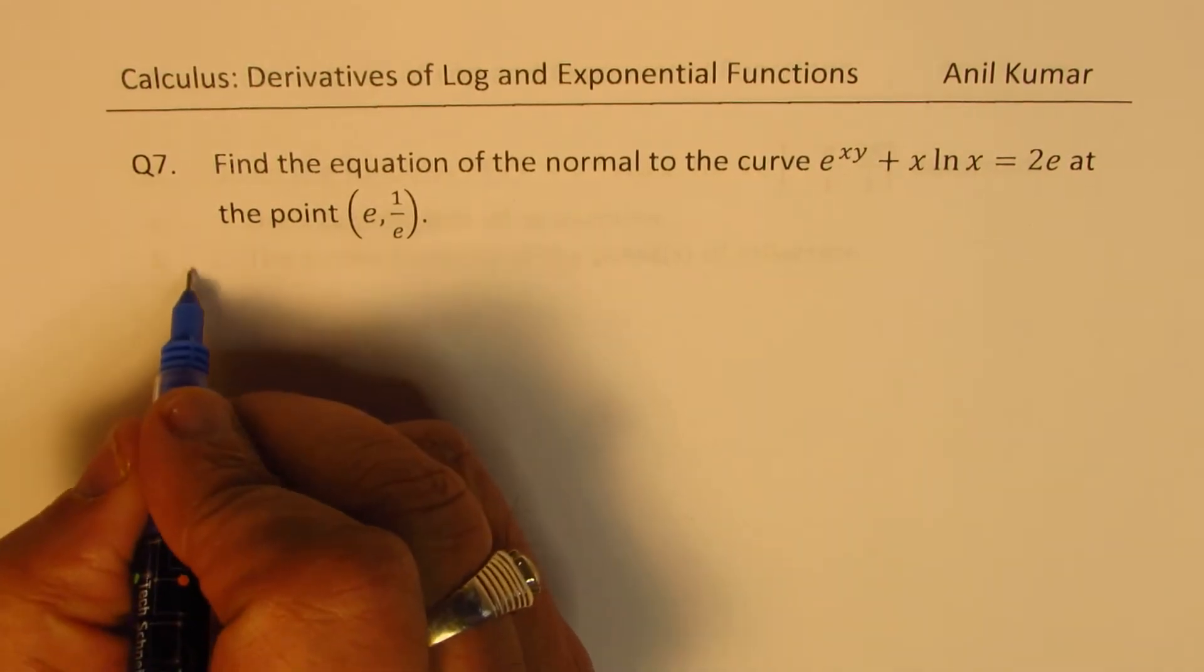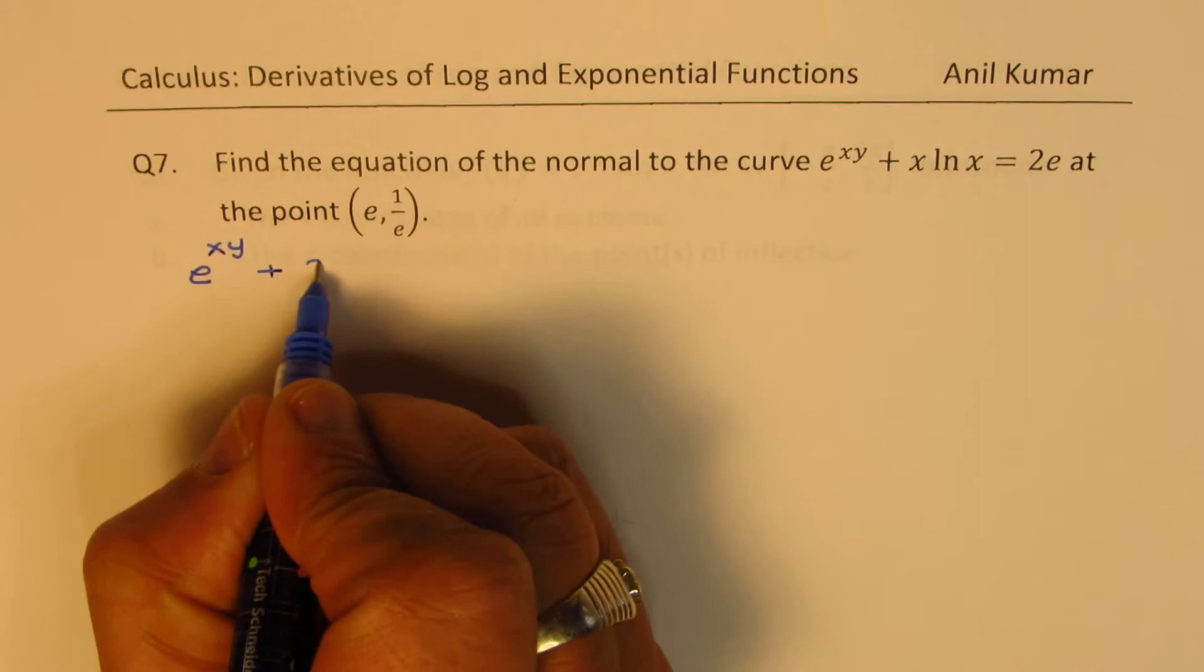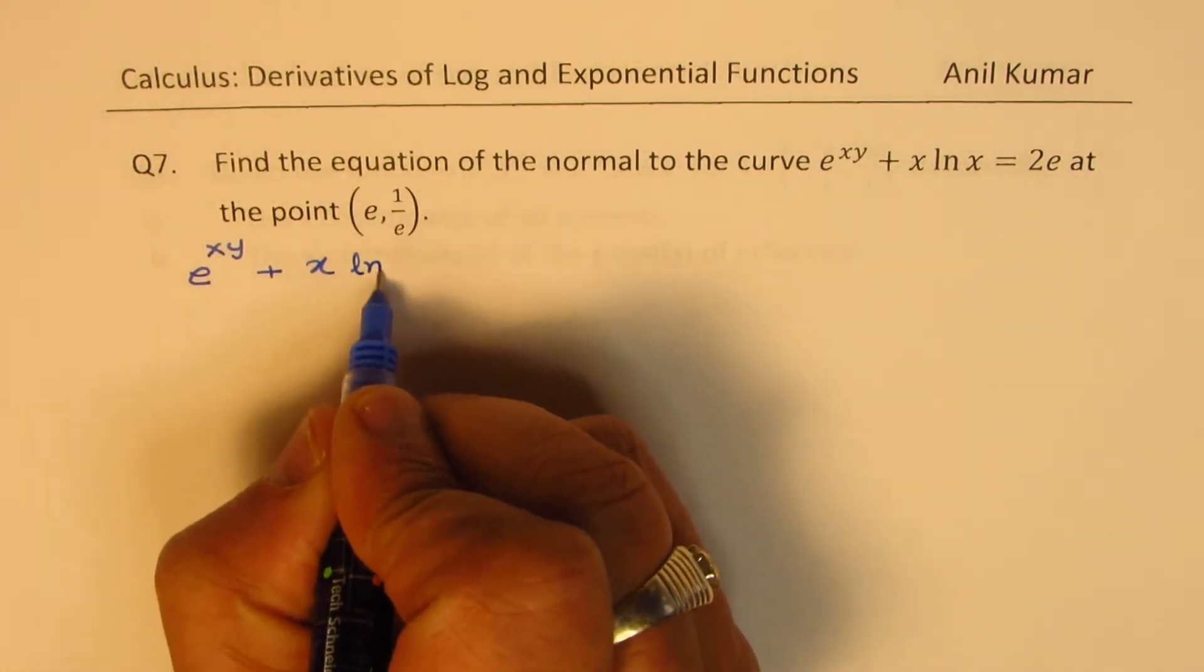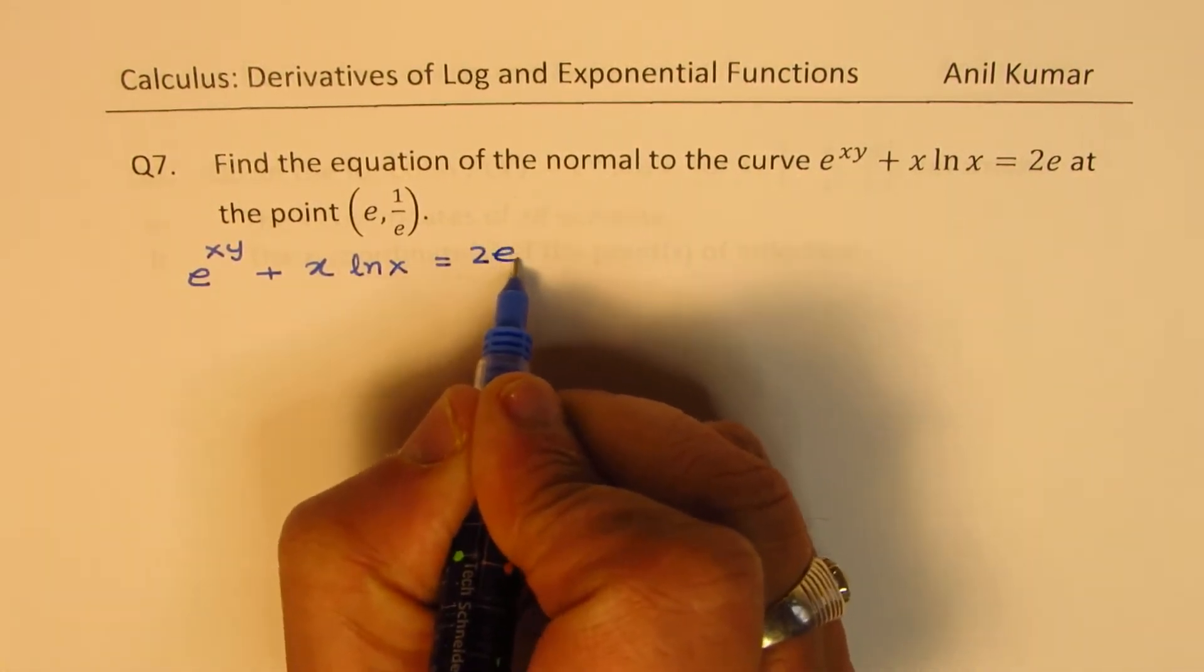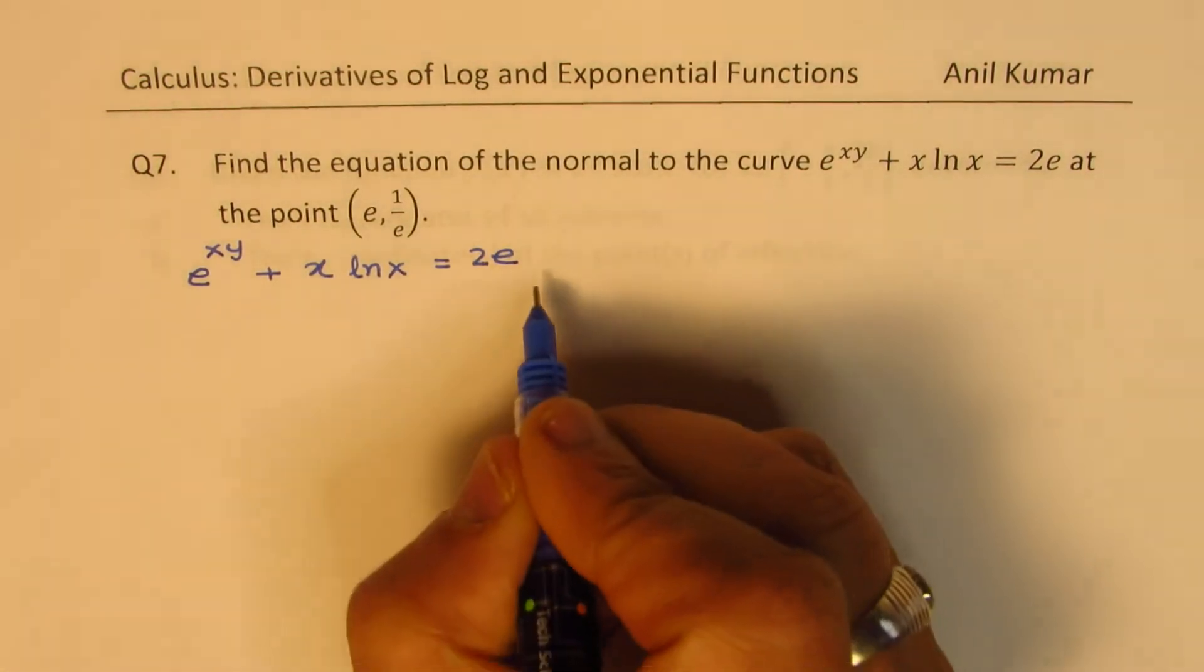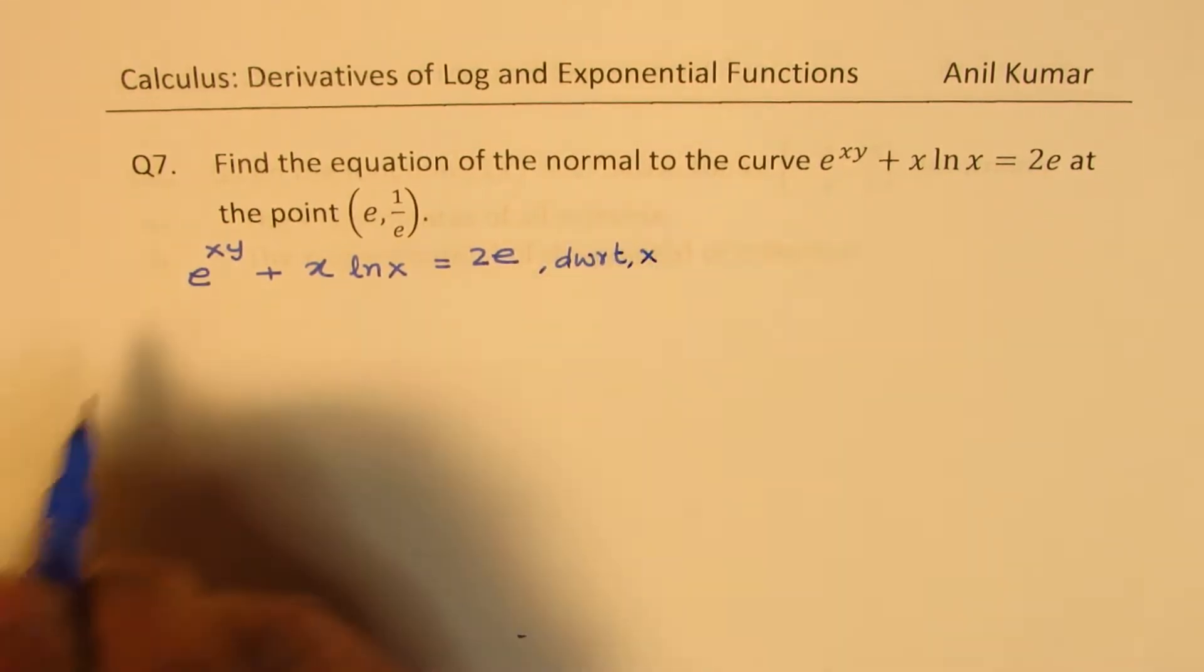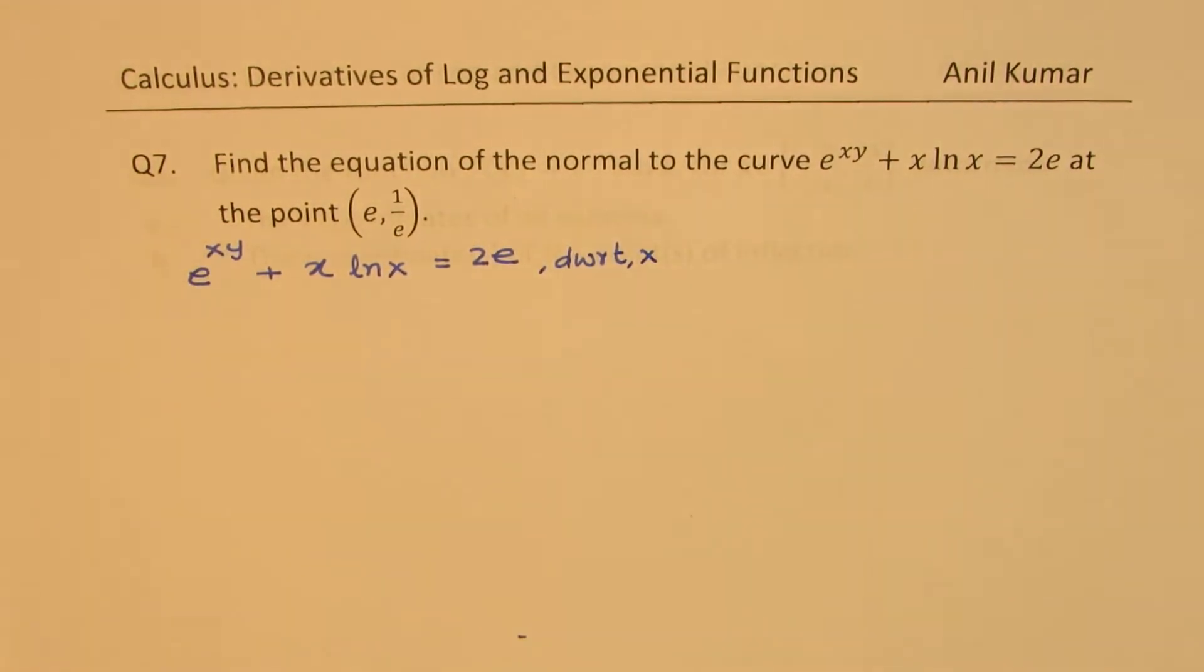We are given the function e^(xy) + x ln(x) = 2e. Remember, 2e are both constants. So let's differentiate with respect to x. Here we will do implicit differentiation.